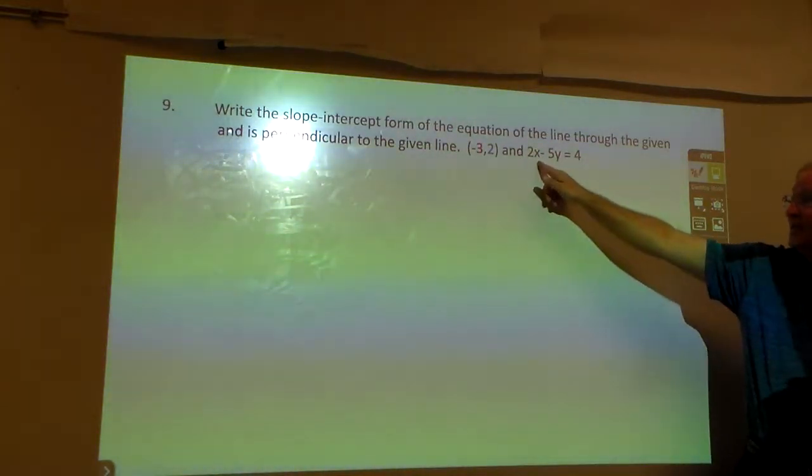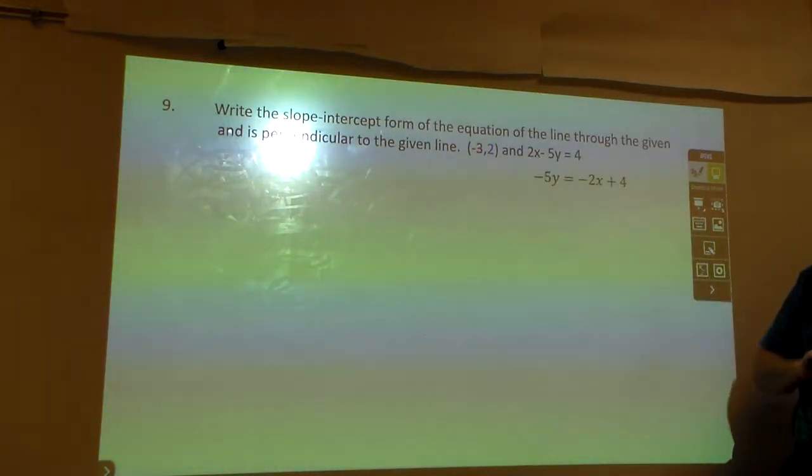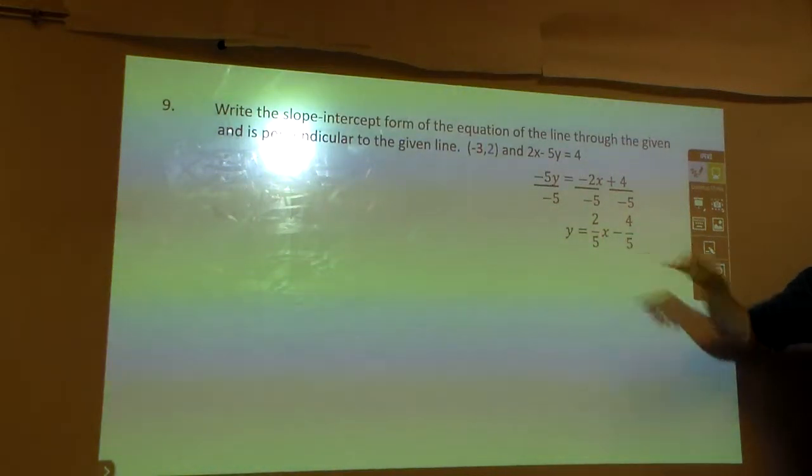So the first thing I need to do is take this and find its slope, which I'm going to do by subtracting 2x and then dividing by negative 5, which makes this here. So what's the slope of this line? 2 fifths.